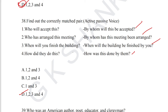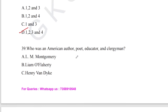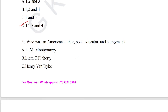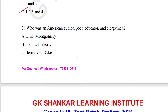Question number 38: find out the correctly matched pair — active to passive voice. (1) 'Who will accept this?' → 'By whom will this be accepted?' (2) 'Who has arranged this meeting?' → 'By whom has this meeting been arranged?' (3) 'When will you finish the building?' → 'When will the building be finished by you?' (4) 'How did they do this?' → 'How was this done by them?' All one, two, three, and four are correctly converted. Option D is the answer for question number 38.